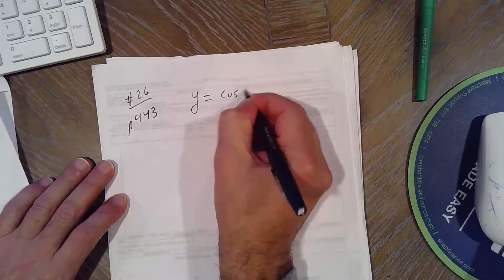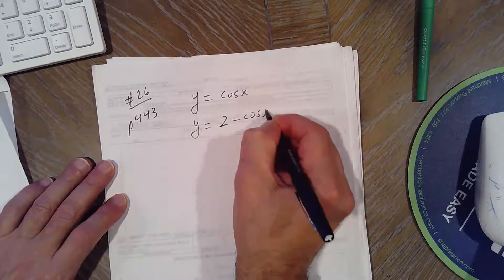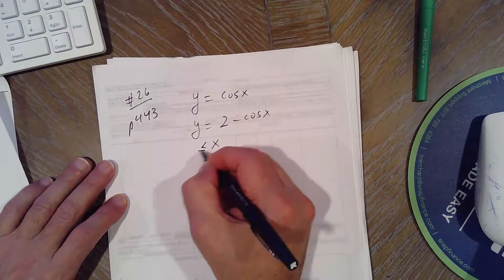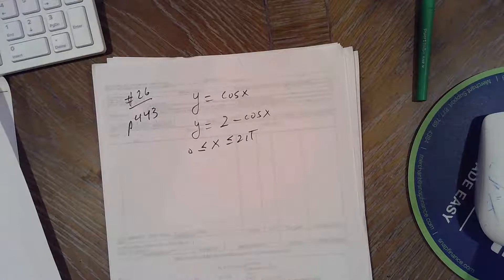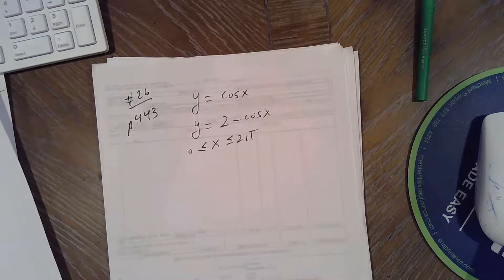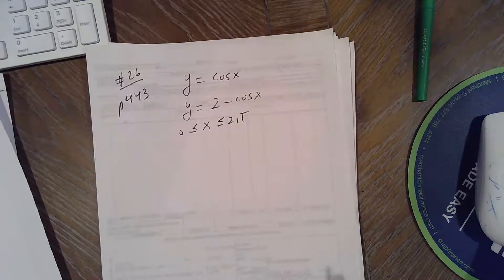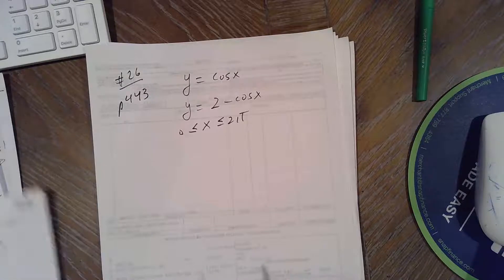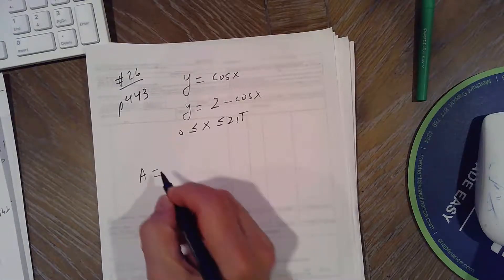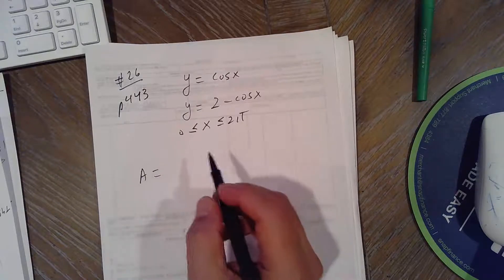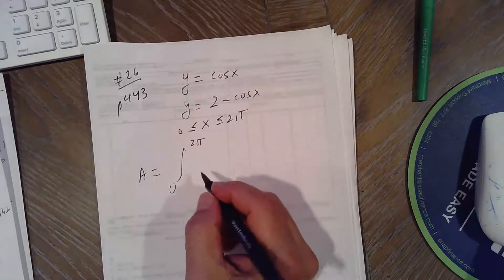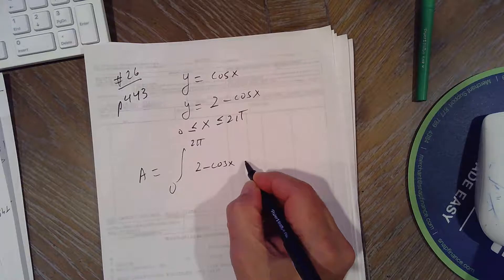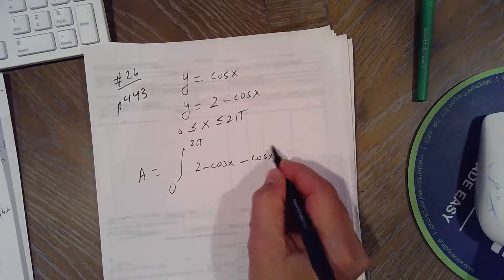But problem 26 page 443, so we have Y equals cosine X, Y equals 2 minus cosine X, X is between 0 and 2π. Let's see what they want. 26, it's a region boundary, and find the area. You can use your calculator. If you graph it on the calculator, you're going to see the outer, so minus the inner, the right minus left, 0 to 2π, right minus, or outer minus inner, so it will be 2 minus cosine X, minus cosine X DX. Let's see why it's this.